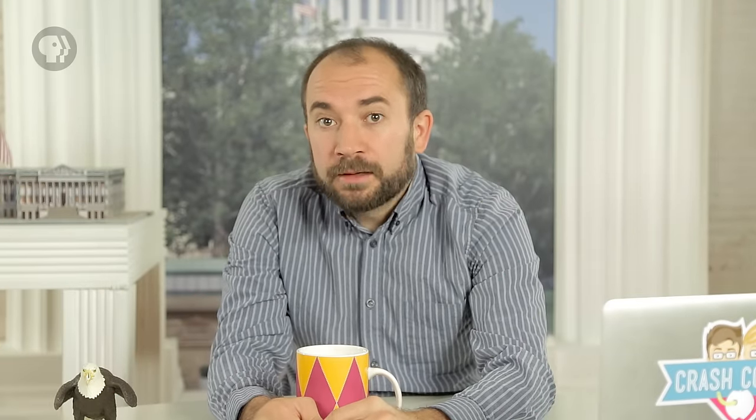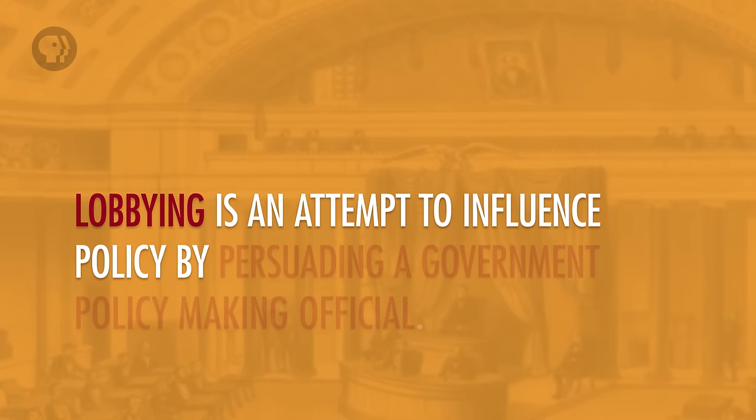I guess we also have to talk about the elephant, or if you're a Democrat, the donkey in the room: lobbying. Lobbying is an attempt to influence policy by persuading a government policy-making official. As we saw when we talked about iron triangles, this can be done by providing officials with information that they can use. But most people still think of it as providing campaign contributions in return for favorable policy outcomes. There's no real evidence of this quid pro quo bargaining, probably because it's really close to bribery and therefore doesn't happen that much. But it has happened in the past, and this idea is pretty powerful, especially if you think all politicians are corrupt.